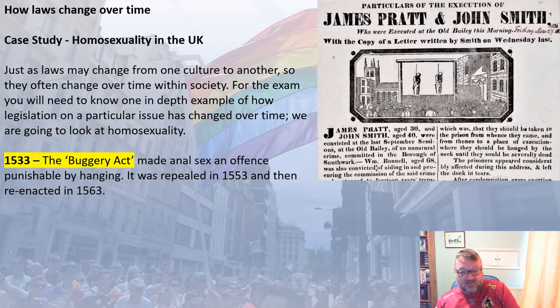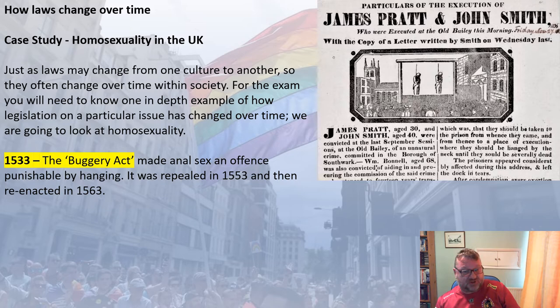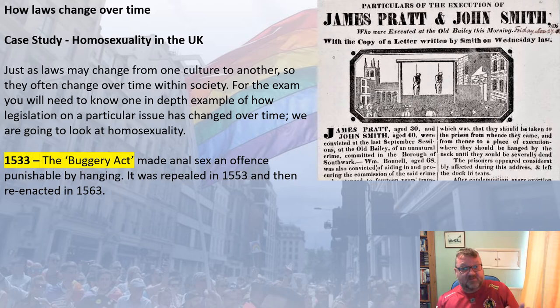Going back to 1533, the Buggery Act made anal sex an offence punishable by hanging. Prior to 1533 homosexuality was dealt with by church courts, but from 1533 the act of anal sex became a capital offence. It was repealed 20 years later but then re-enacted, so from 1533 homosexuality was punishable by death. James Pratt and John Smith were the last people in this country to be hanged for sodomy, in 1835.